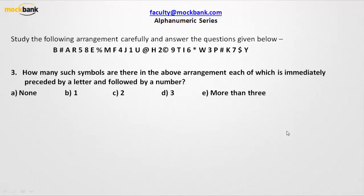The question is asking: how many such symbols are there in the above arrangement, each of which is immediately preceded by a letter and followed by a number? So we need to find out a symbol that is immediately preceded by a letter and followed by a number. Let us look at all the symbols.